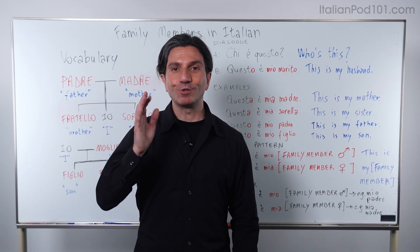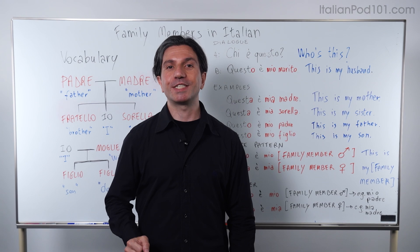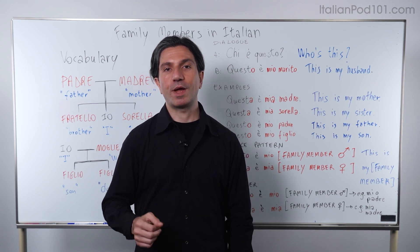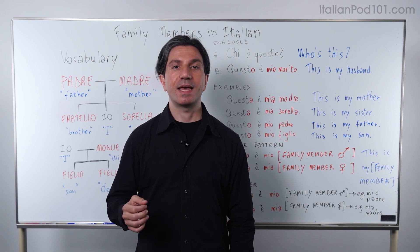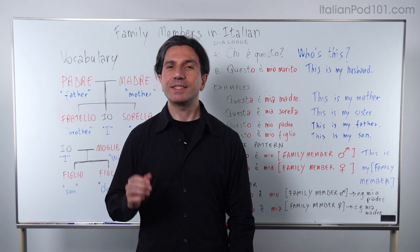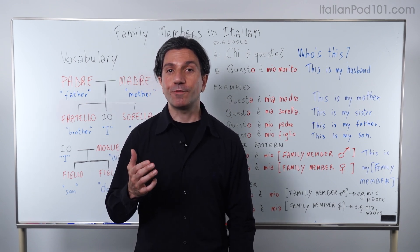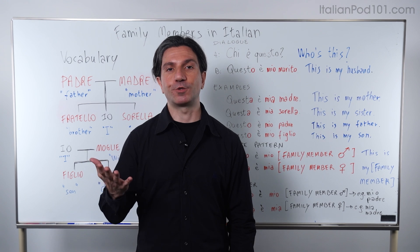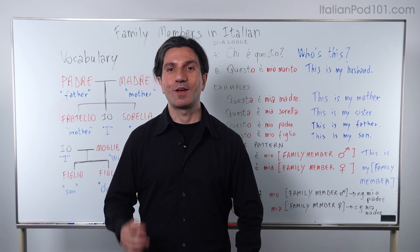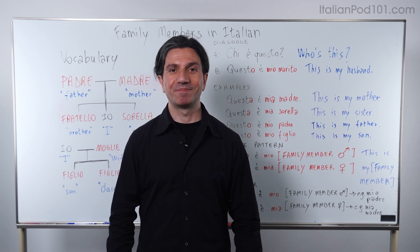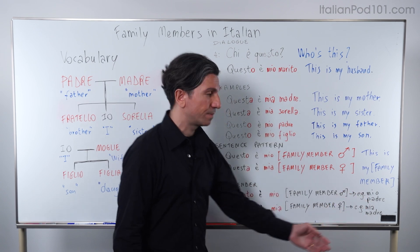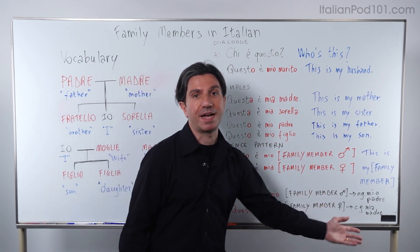Remember to use the right gender when using possessive adjectives. The word for 'my' is mio when your family member is male, and mia when the family member is female. It's similar with the demonstrative pronoun — the word for 'this' is questo when your family member is male, and questa when the family member is female. For example: masculine — mio padre; feminine — mia madre.